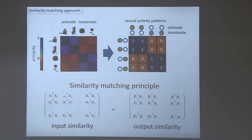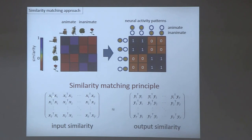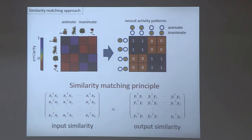The similarity matching principle is that at every stage, a neuronal network tries to match the similarity of inputs by the similarity of outputs. Mathematically, similarities are just scalar products: X1^T X1, X1^T X2, and so on. You have a T×T matrix of input similarities and match it with a T×T matrix of output similarities. The solution to this objective has been known in multidimensional scaling — it is the projection to the principal subspace, which up to a rotation is identical to principal component analysis. But we did two things differently: we proposed an online algorithm, and we introduced the constraint that Y_t is non-negative, motivated by biology.